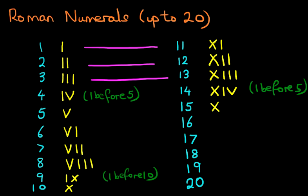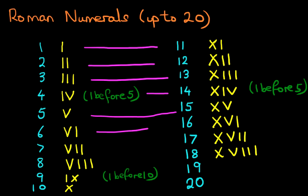15 is X, V. 16 is X, V, I. 17 is X, V, I, I. 18 is X, V, 1, 2, 3. That is 18. Now do you notice all the numbers are the same? I'm just going to join them all together. Do you notice how they're all the same? The only difference is that there's an X before it.